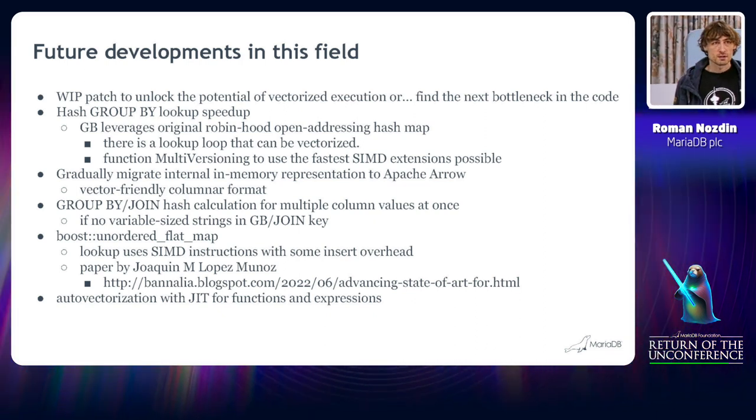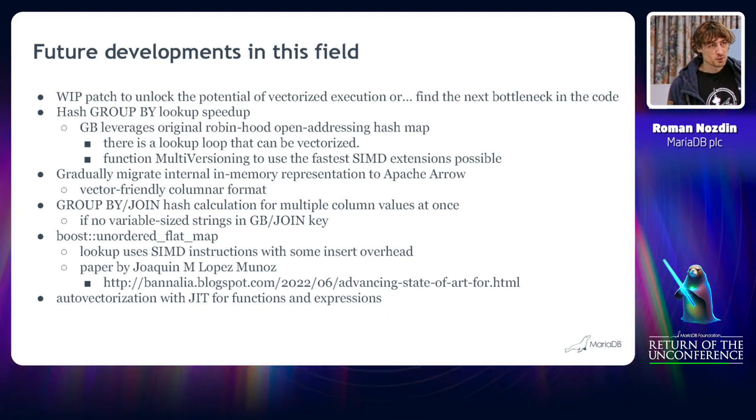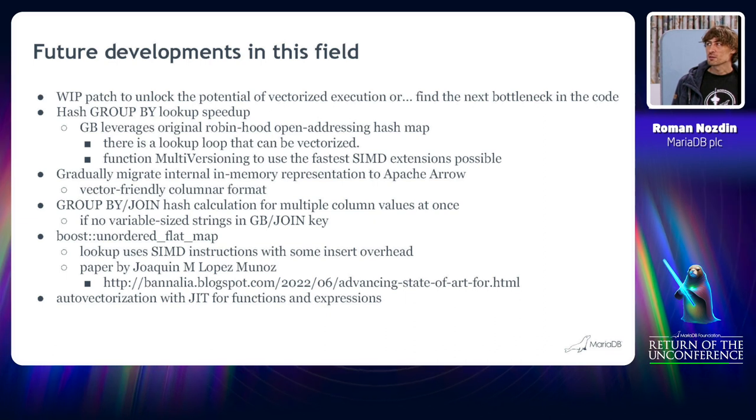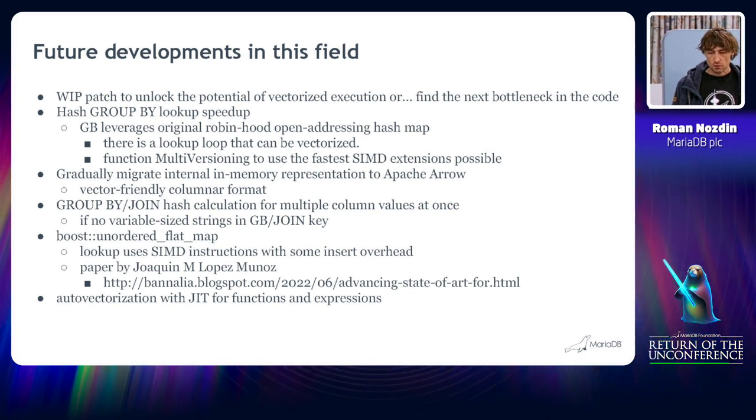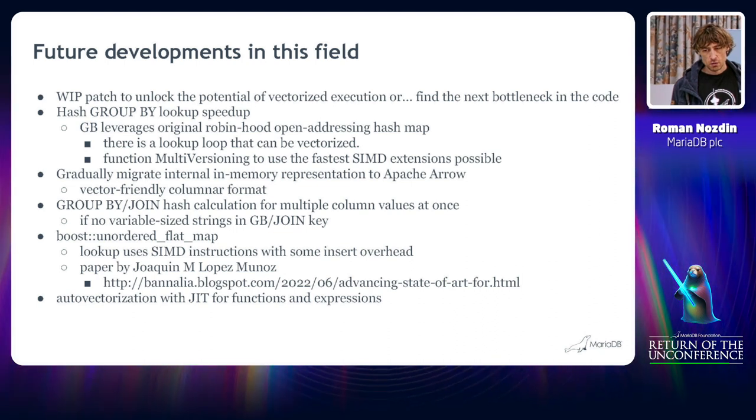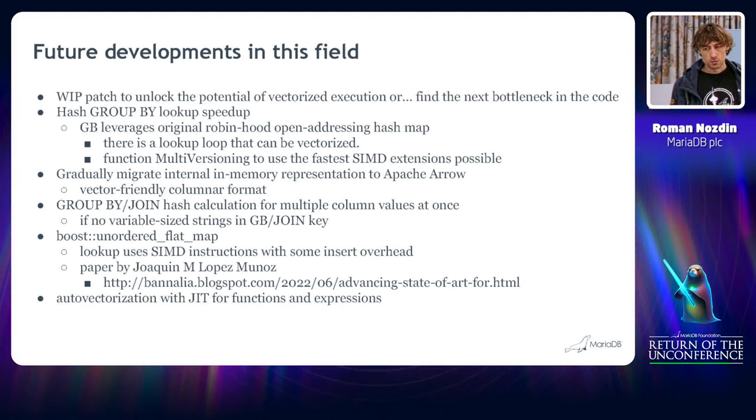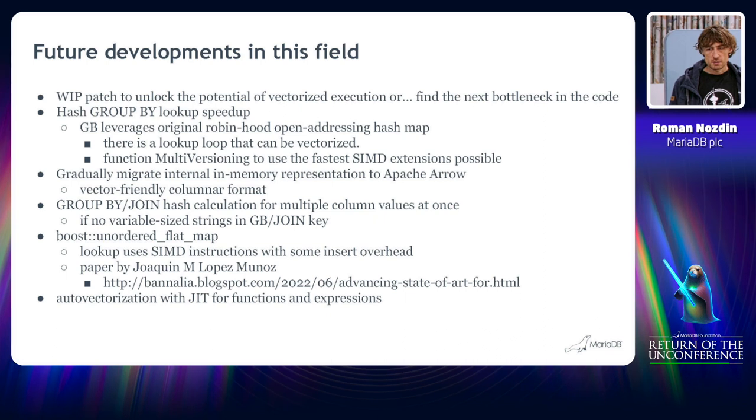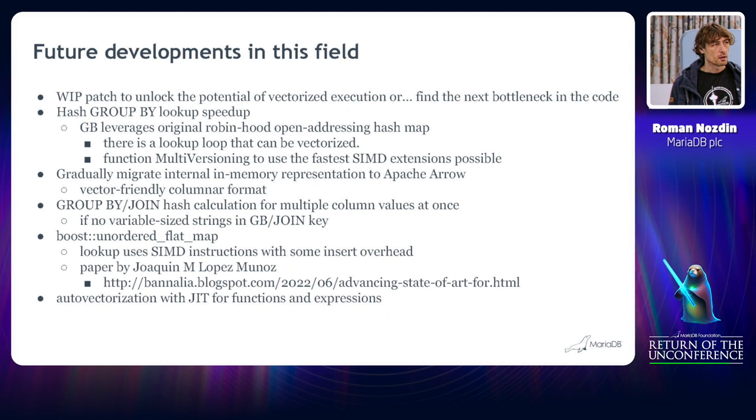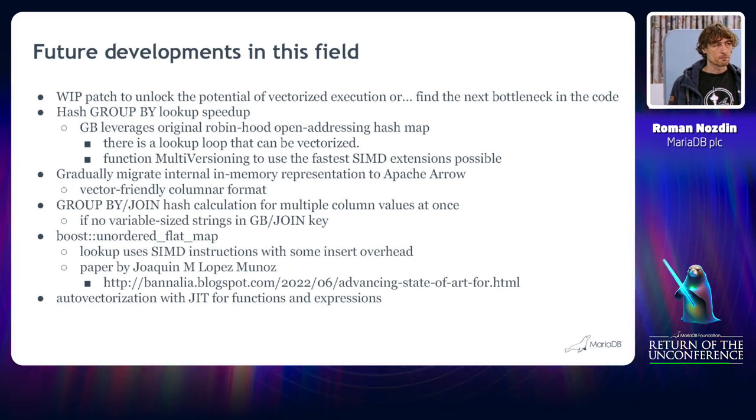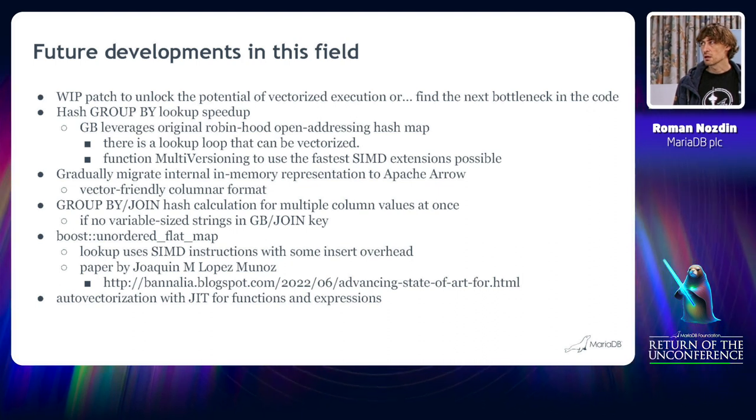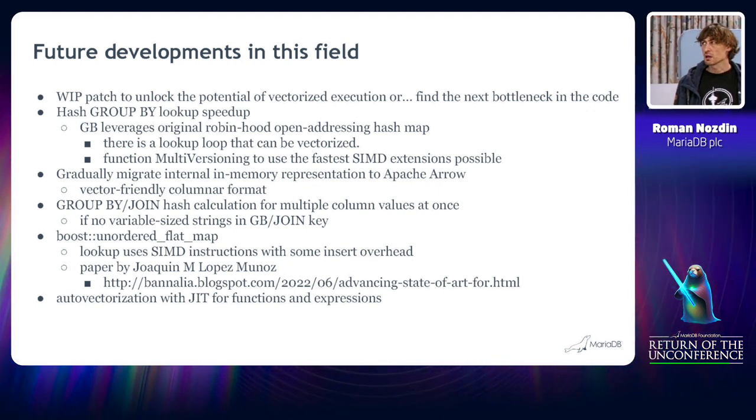And I hope that Teresa will be working on this. There is a special implementation of group by that leverages the original Robin Hood hash map. And there is a very attractive loop that might be vectorized easily. And this loop is used very often. So, we can decrease the lookup time for this hash map.